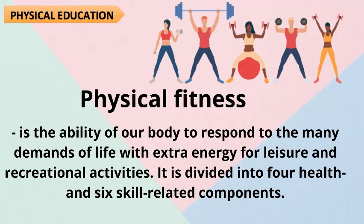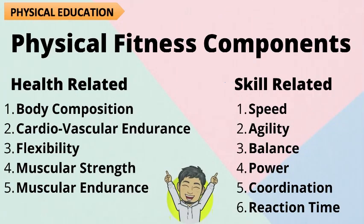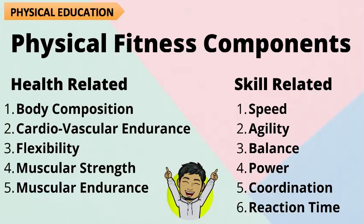Physical Fitness is divided into four health-related and skill-related components. Health-Related components include: Body Composition, Cardiovascular Endurance, Flexibility, Muscular Strength, and Muscular Endurance. Skill-Related components include: Speed, Agility, Balance, Power, Coordination, and Reaction Time.